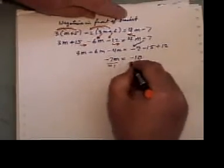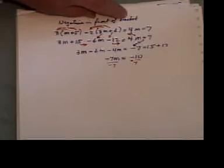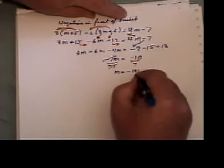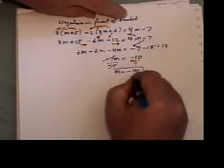Divide both sides by negative 7. And that will cancel that. And then we're left with negative 10 over 7. That's what m equals.